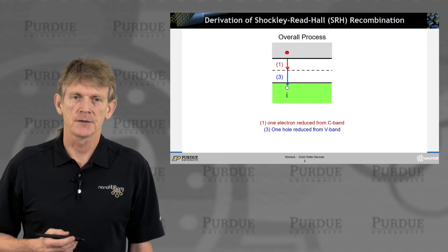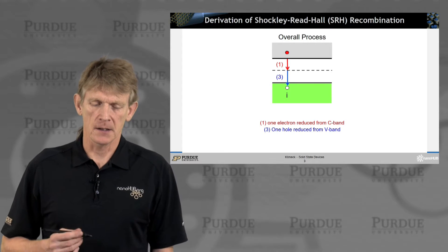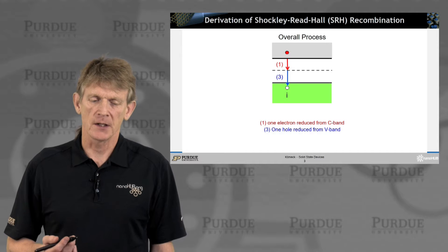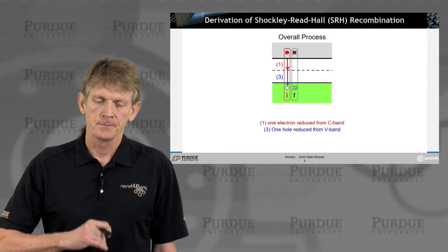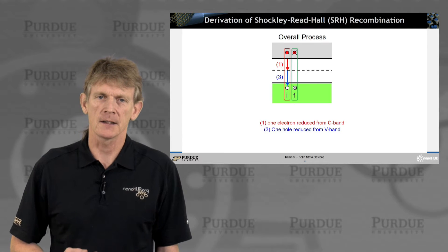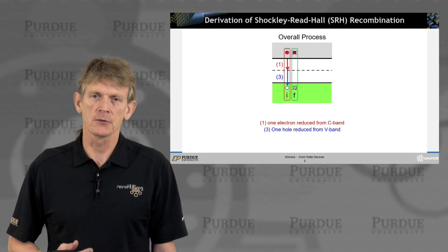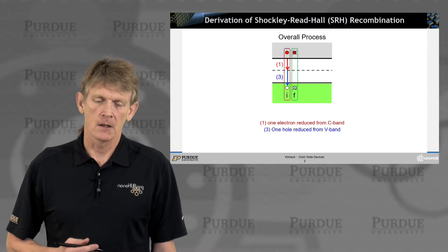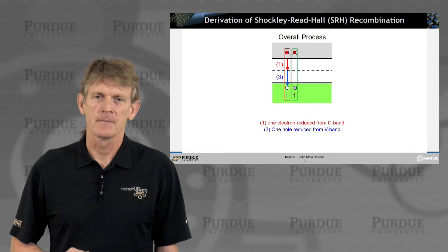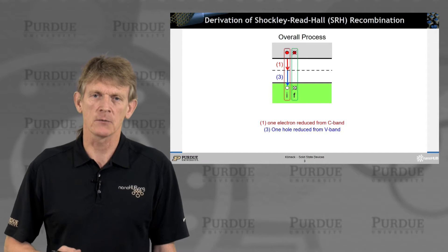The overall process consists of two components, and each component has two steps. The first one is the electron reduction and a hole reduction, meaning an electron is destroyed and a hole is destroyed. That's process one and process three as indicated here. It's always useful in considering any scattering calculations — if you ever take a course on quantum mechanics, on calculating scattering rates or transitions between states — to define initial and final states. The initial state here is an electron being in the conduction band and a hole being in the valence band, and the final state is the destroyed hole and the destroyed electron.